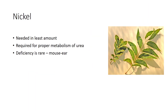Nickel is the most recently identified essential element, and one needed in the least amounts. It is required by plants and microorganisms for the proper metabolism of the simple nitrogen compound urea and perhaps other uses. While deficiencies are rare, a symptom of tiny leaves called mouseear has been observed on river birch and some other trees. Nickel can be toxic to biological systems at relatively low levels.